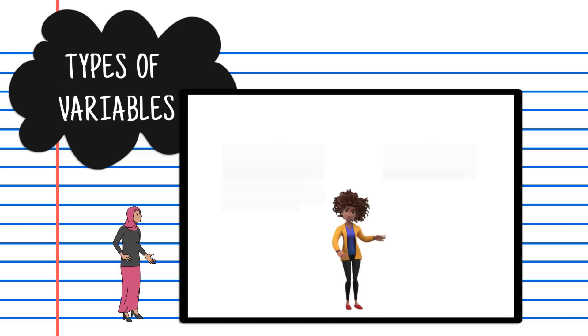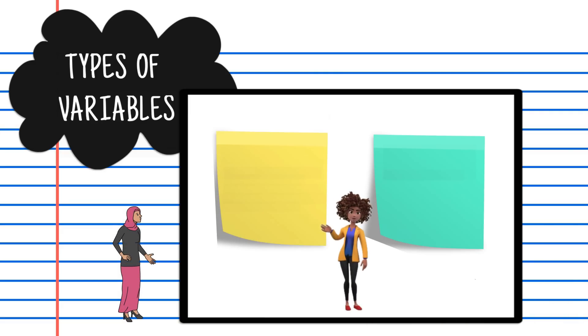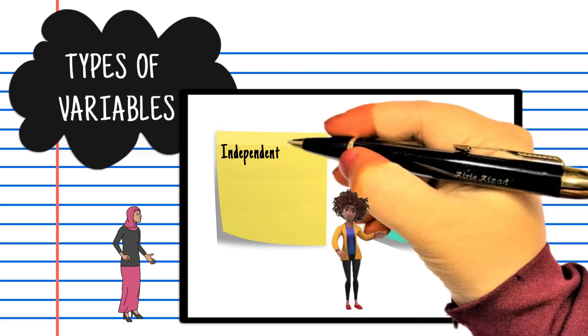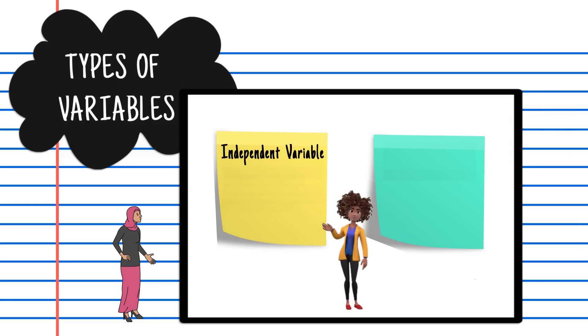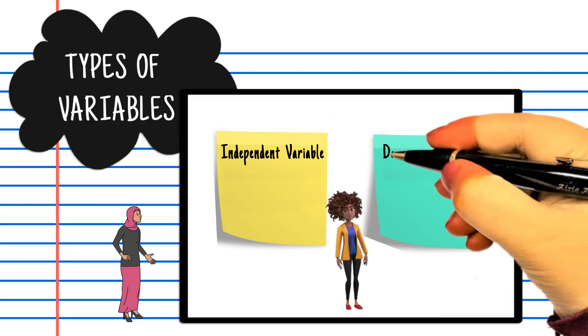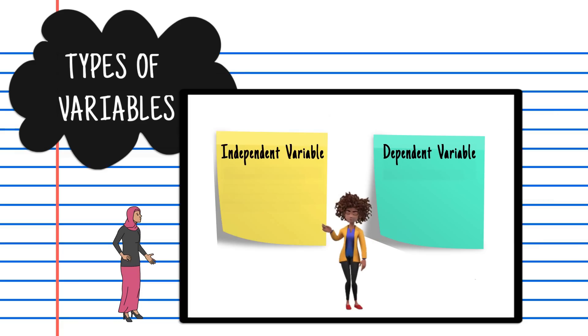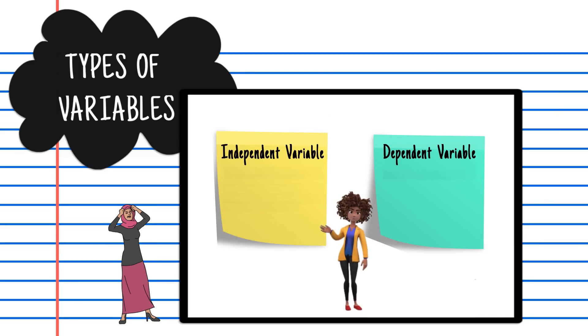In scientific experiments, there are two kinds of variables: 1. The Independent Variable, and 2. The Dependent Variable. It is important to be able to identify which is which in an experiment.